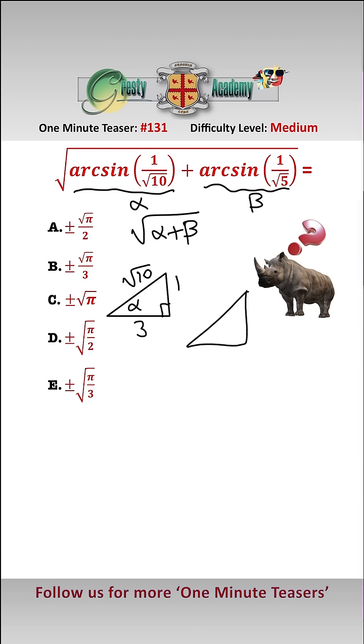And likewise beta, let's draw that triangle. We have here beta, and if its sine is 1 over root 5, then by Pythagoras we have that this is 2.